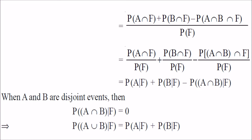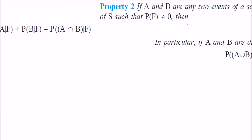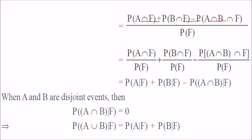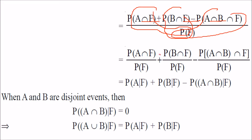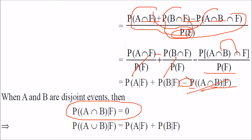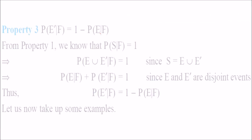Separating the terms, we get P(A|F) plus P(B|F) minus P(A∩B|F). In particular, if A and B are disjoint sets, then P(A∩B|F) is zero, so P(A∪B|F) gives only P(A|F) plus P(B|F).